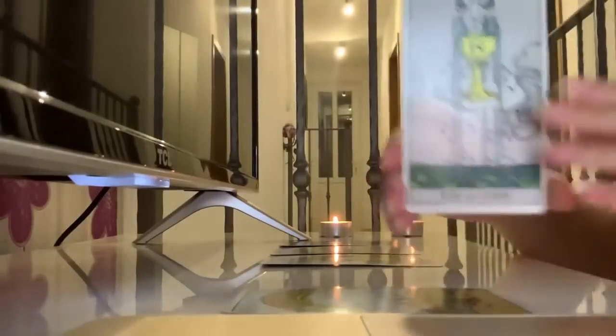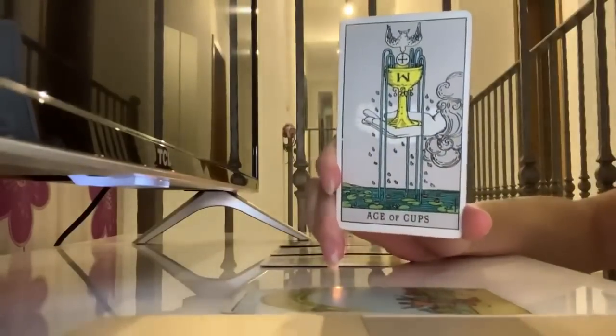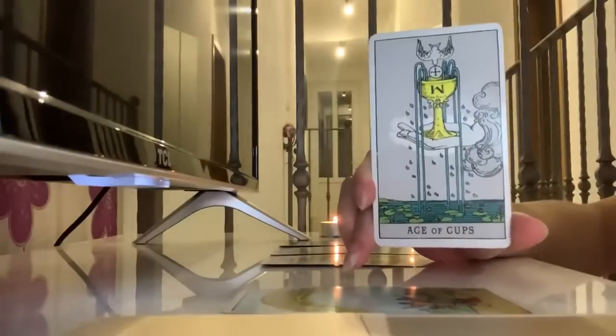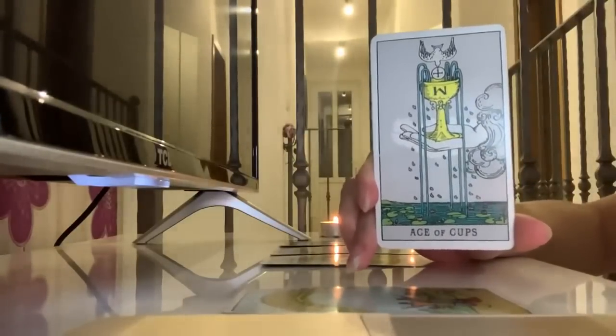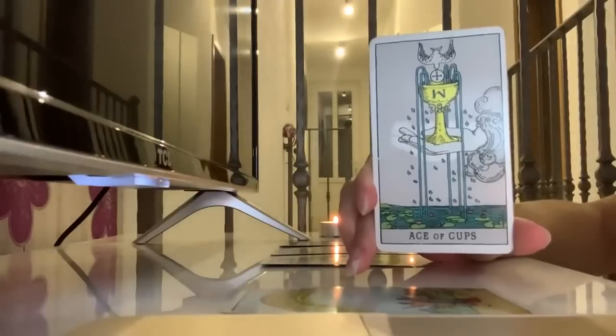And that's symbolized by the bird here. Now, the bird is a message. So for some of you, there's either a message from someone new, a message from someone from the past, a message from the universe or a physical message, a text, an email that is coming your way. And it's coming from someone who wants you to hear a message.